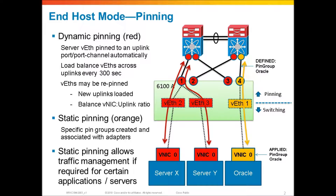So what it's going to do is make a load balancing decision, and it could move any one of these server connections to a new uplink. In this case, it's going to move server Y from uplink one to uplink two. In doing that, it would have to send a gratuitous ARP out of uplink two to alert the upstream network that this MAC address has moved, and it will do that.